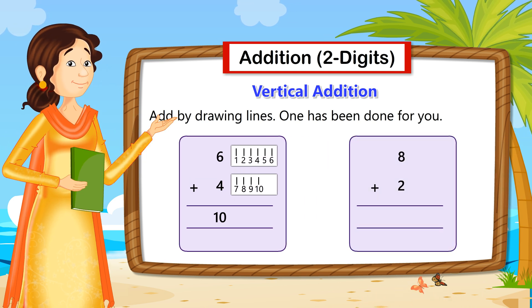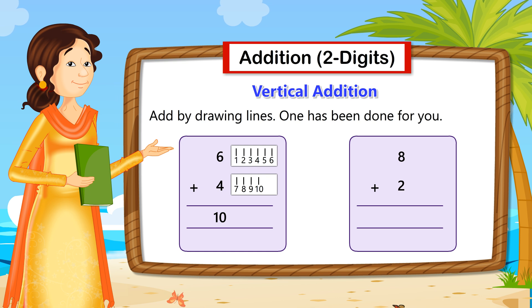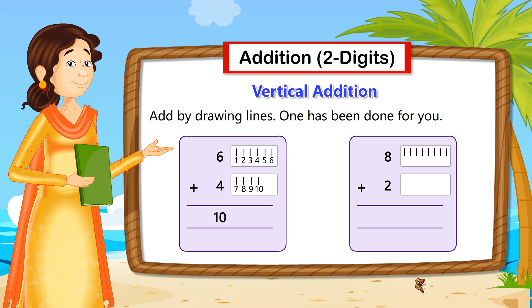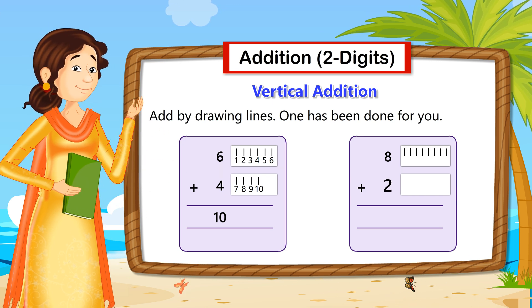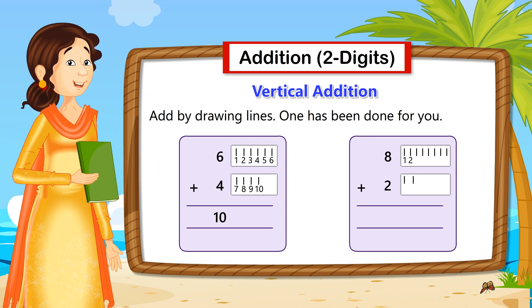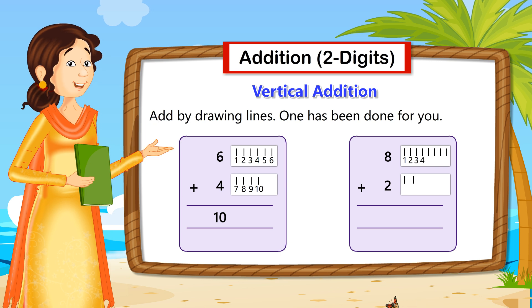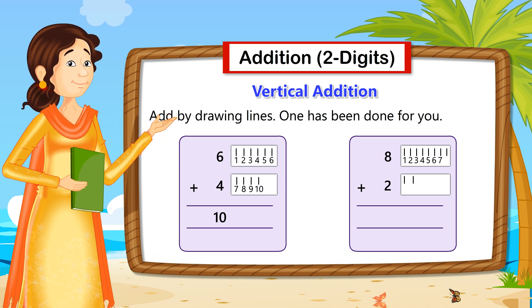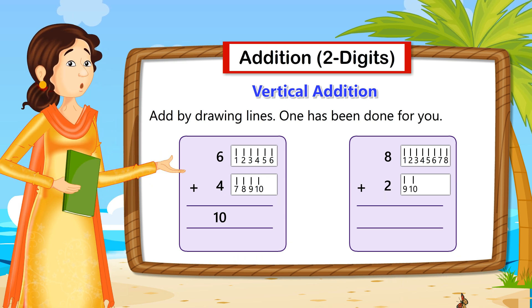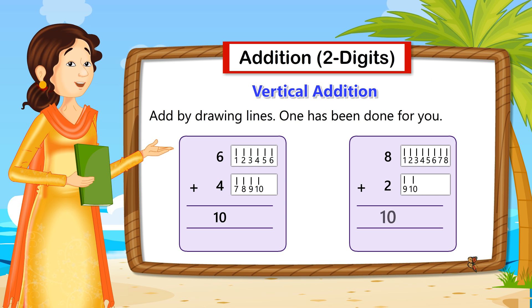Now let's add 8 and 2. The first digit is 8, so let's draw 8 lines. Now we need to count the total number of lines: 1, 2, 3, 4, 5, 6, 7, 8, 9, 10. So 8 plus 2 is 10.